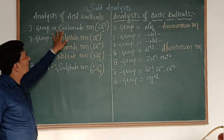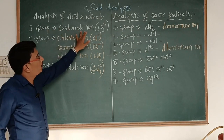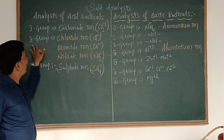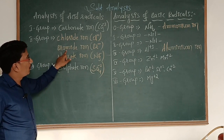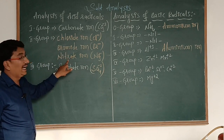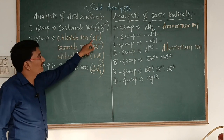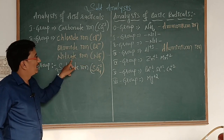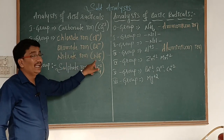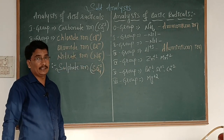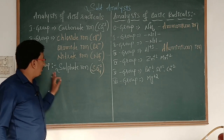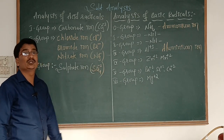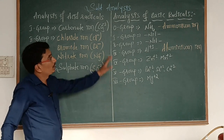In the first group, we observed carbonate ion, CO3²⁻. In the second group, chloride ion Cl⁻, bromide ion Br⁻, and nitrate ion NO3⁻ ions are present. In the third group, sulfate ion SO4²⁻ is present.